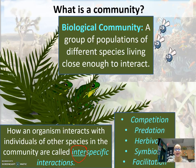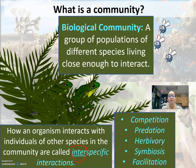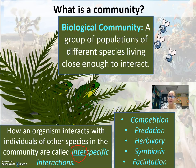When we look at a community and how populations interact, you have competition between individuals — like the fox and the mountain lion both competing for frogs. You have predation, predator-prey relationships, herbivory like what herbivores eat those plants, symbiosis, and facilitation.